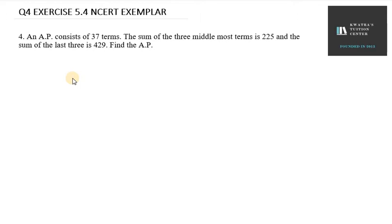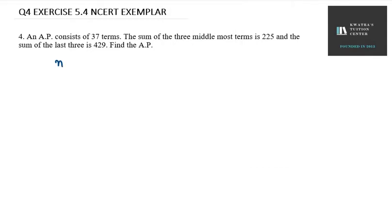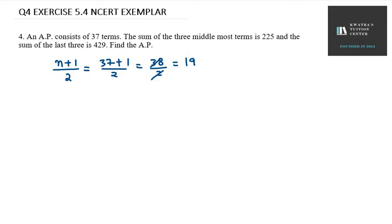First we have to find the middle most terms. The middle most term is given by (N+1)/2. So it will be (37+1)/2, which is 38/2, giving us 19. So the 19th term is the middle most term.